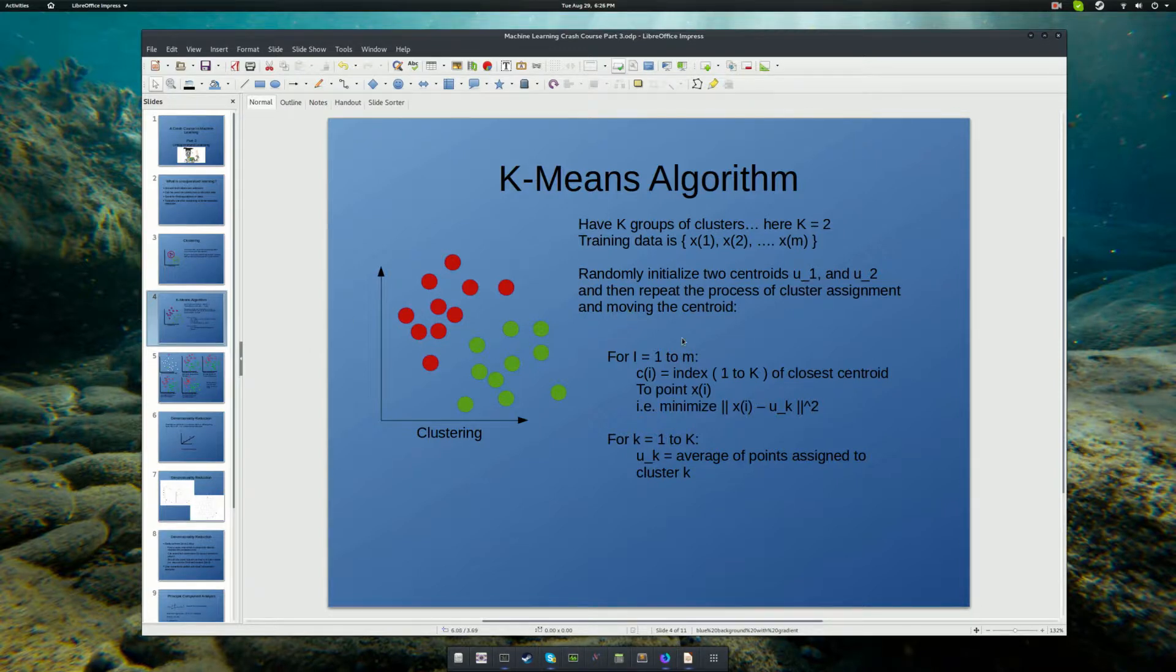So, to assign a cluster to the points, remember they start out unlabeled. You compute the distance from the point to the nearest centroid. And you want to minimize that distance from the nearest centroid. In other words, the modulus squared of the distance. After you do that for all points, you'll end up with all of the points assigned to one or the other of the centroids, because they'll be closer to one or the other.